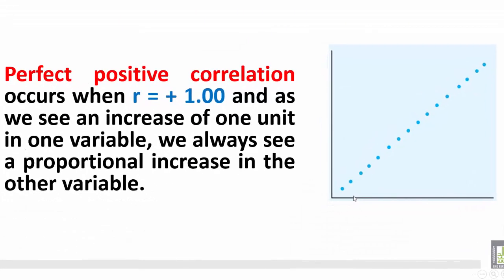As the X increases with one unit, the Y increases in one unit proportionally. As the independent variable increases one unit, the Y increases again. So this is the perfect positive correlation.